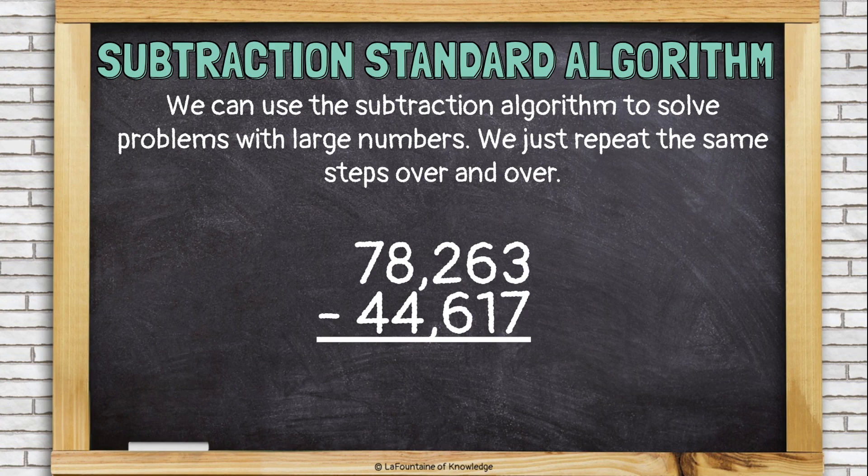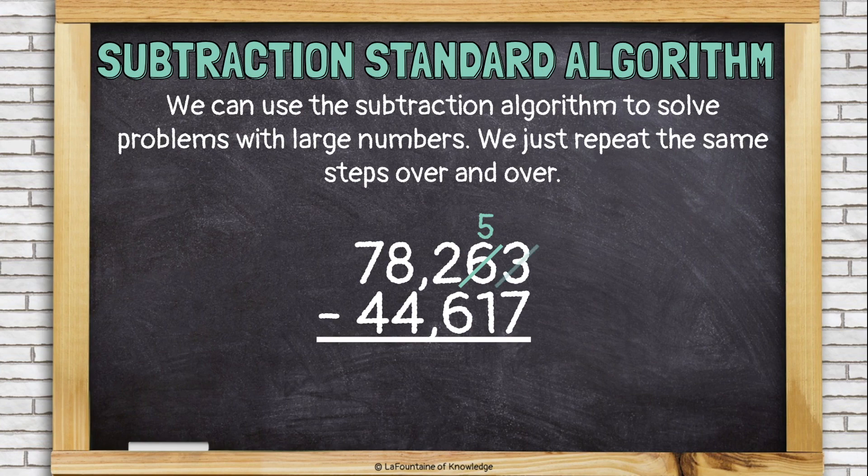So, let's borrow or regroup to make sure our number in the ones place is large enough to subtract. We're going to take away a ten. We had six tens. We took one away. So, now we're left with five tens. And, we're going to turn that ten into ten more ones. We had three ones. We just got ten more of them. That gives us thirteen ones. And, now we can subtract. Thirteen minus seven is six.